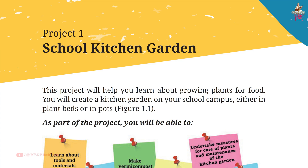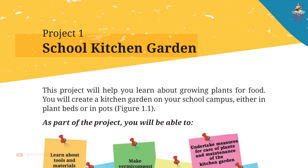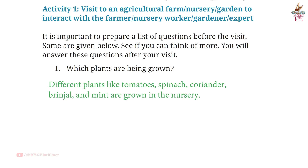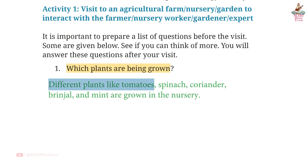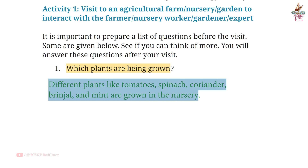Project 1: School Kitchen Garden — question answers from Class 6 subject Vocational Education, book Kaushal Board, page 9. Question 1: Which plants are being grown? Answer: Different plants like tomatoes, spinach, coriander, brinjal, and mint are grown in the nursery.